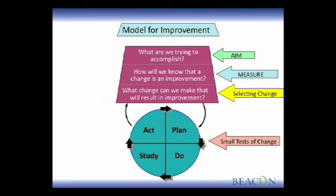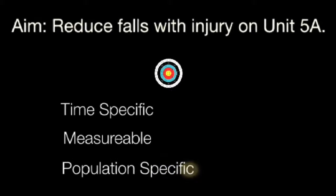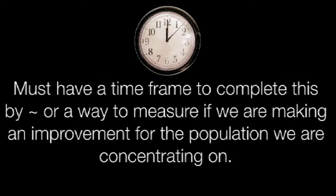The Model for Improvement is a process improvement tool designed to improve systems and processes. The aim must be time-specific, measurable, and population specific. We must always have a time frame to complete this by — a way to measure whether we are making an improvement for a population we are concentrating on. In our case, what is the time frame that we want to decrease falls by? By six months.